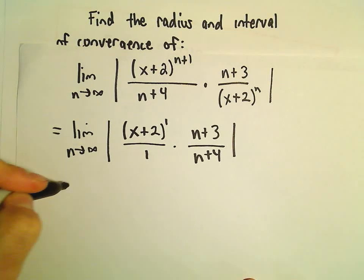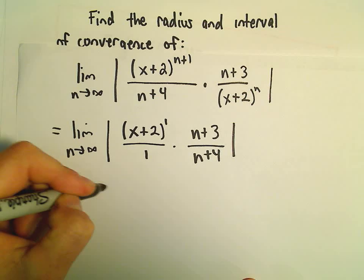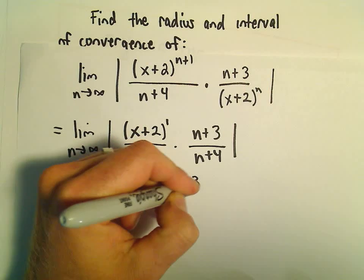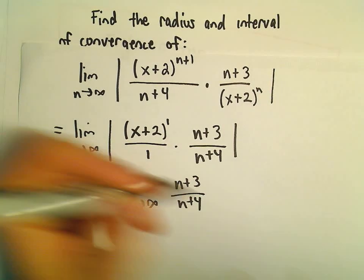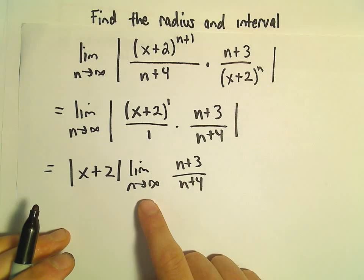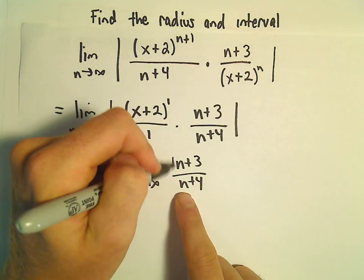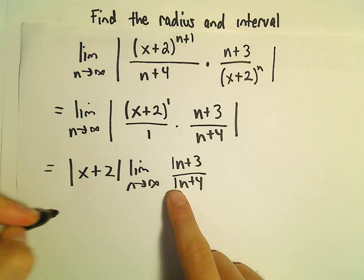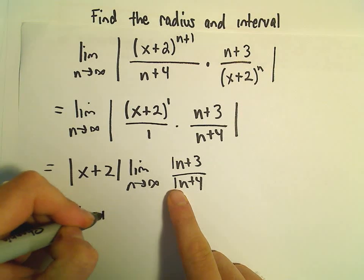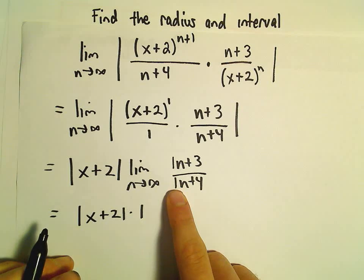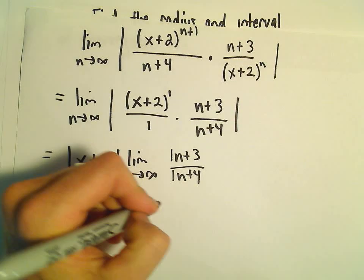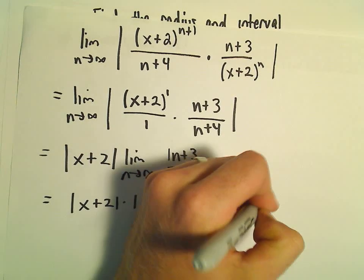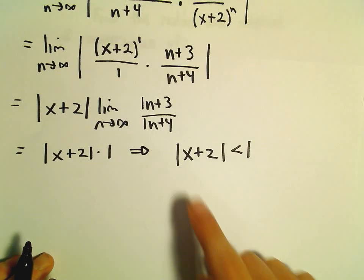We can pull the x plus 2 out and keep it in absolute value. The limit as n goes to infinity of n plus 3 over n plus 4 — the degree of the numerator is the same as the denominator, so the ratio of leading coefficients gives us 1 as our limit. We want this limit to be less than 1, so we need the absolute value of x plus 2 to be less than 1.